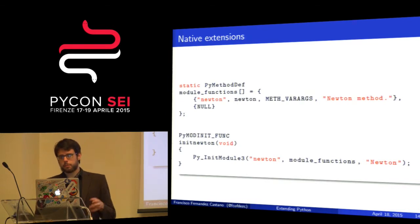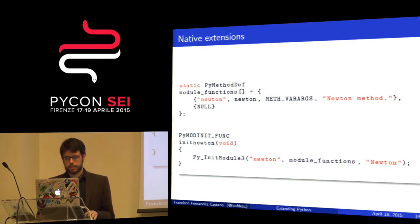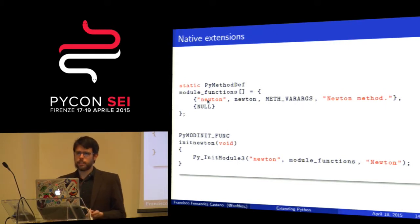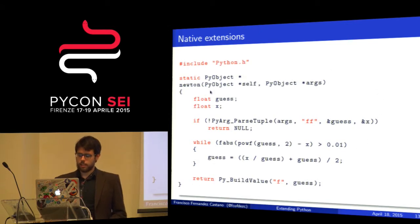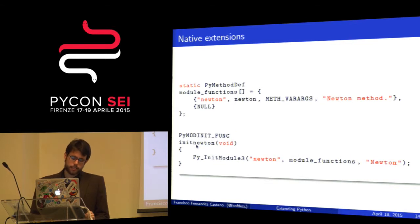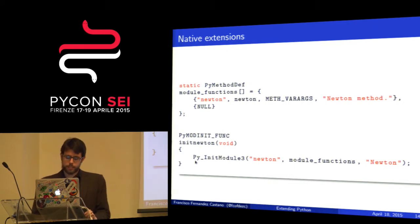When writing extensions, we are writing a module. I need to declare which methods are in this module, and give the interpreter a way to know what is declared. I declare that this module has a function named Newton with a pointer to the function I declared before. It will take only arguments and not keyword arguments, plus a docstring. I also need to tell CPython what to do when it loads this shared library — initialize this module with the name Newton, with these functions, and this is my docstring.